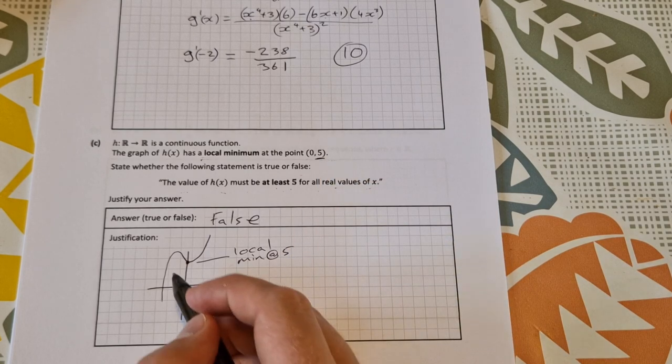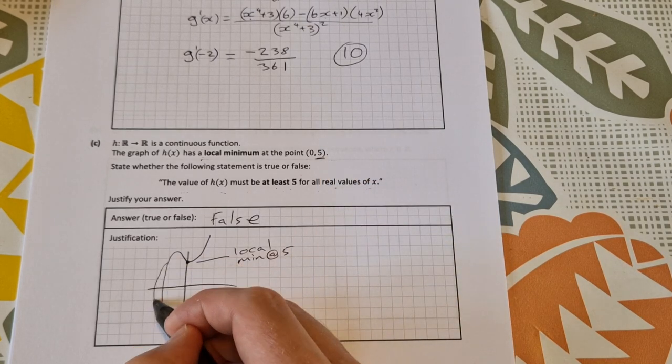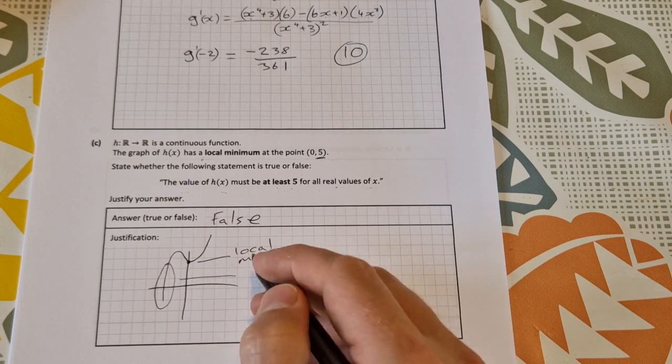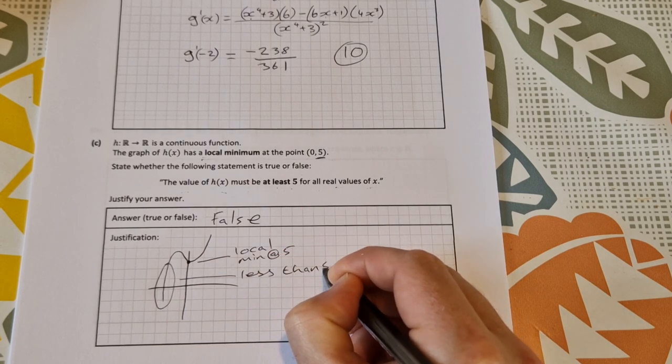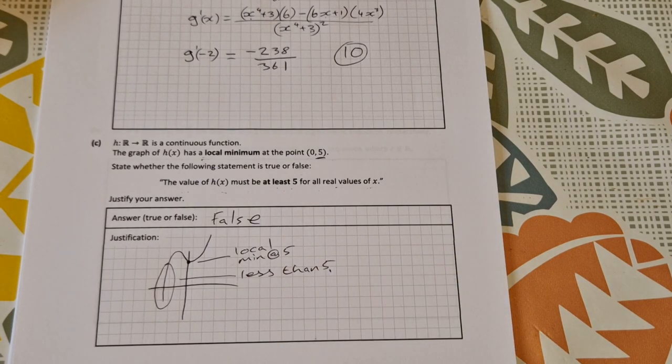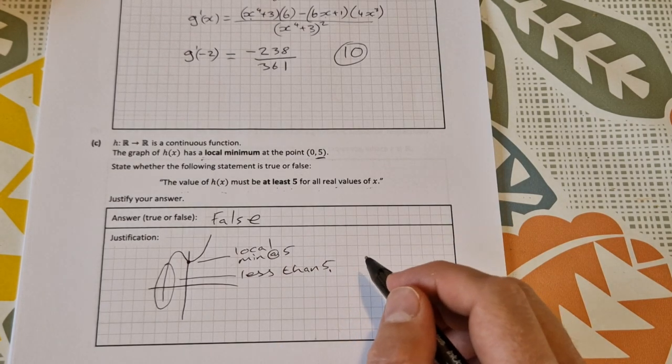We can see that this part of the graph here is less than 5, and that's all the justification you need. That is worth 10 marks.